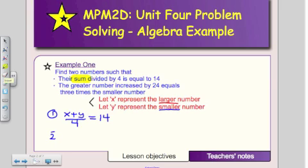And equation number 2, the greater number increased by 24. So if the greater number is X, larger number, increased by 24, is going to equal 3 times the smaller number.